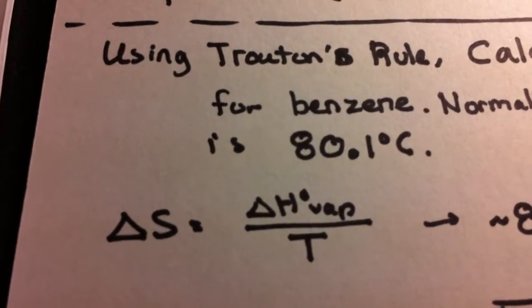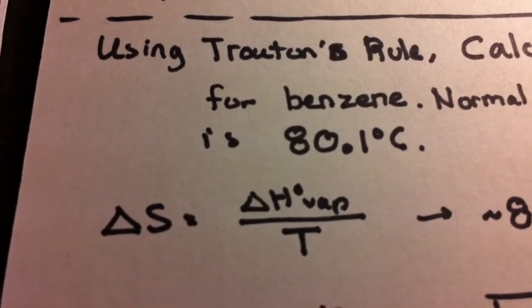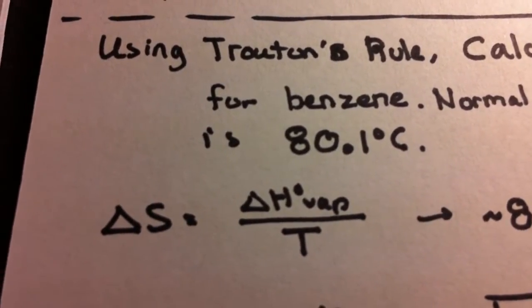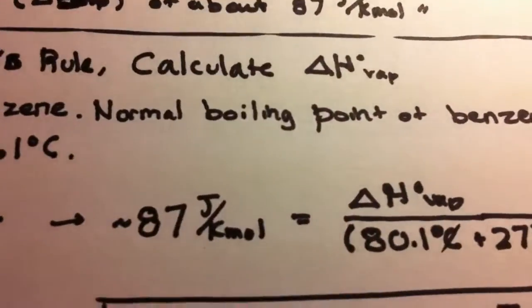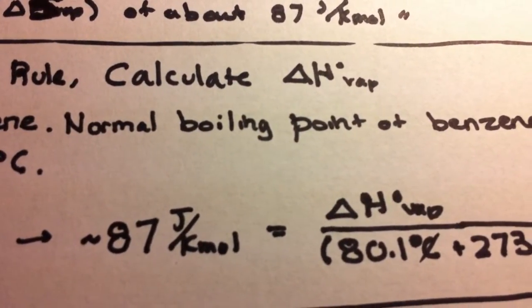Let's start with delta S equals delta H vaporization over T, T meaning temperature. Let's plug in our values. Using Troughton's rule, we know that delta S is about 87 joules per Kelvin mole.